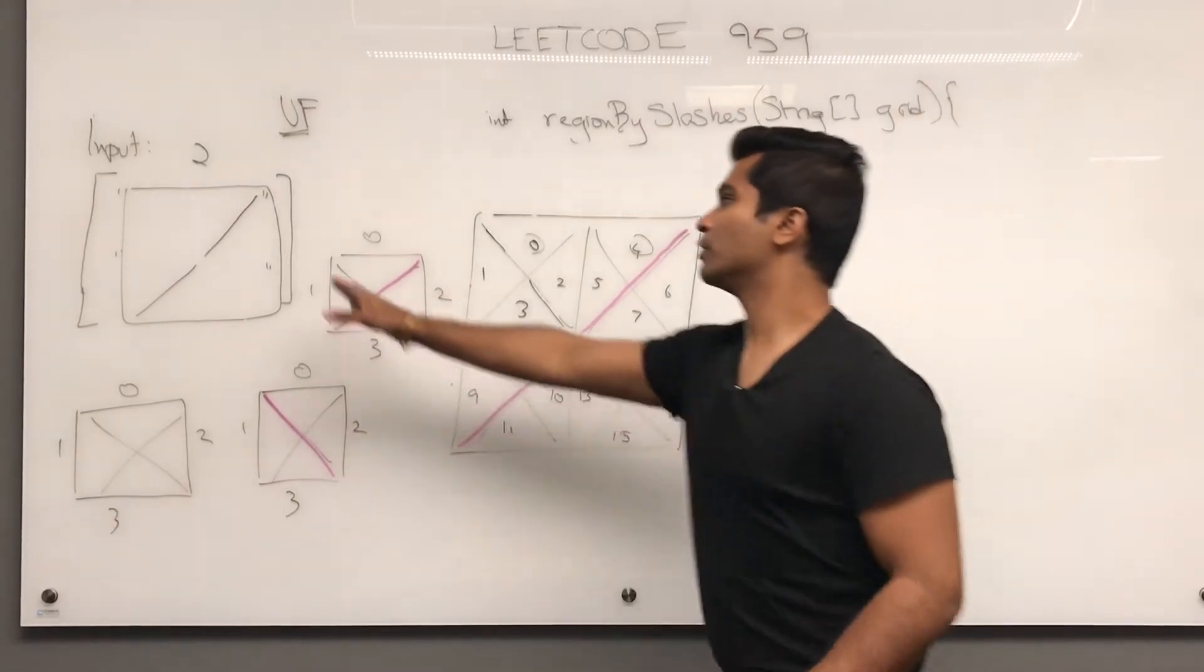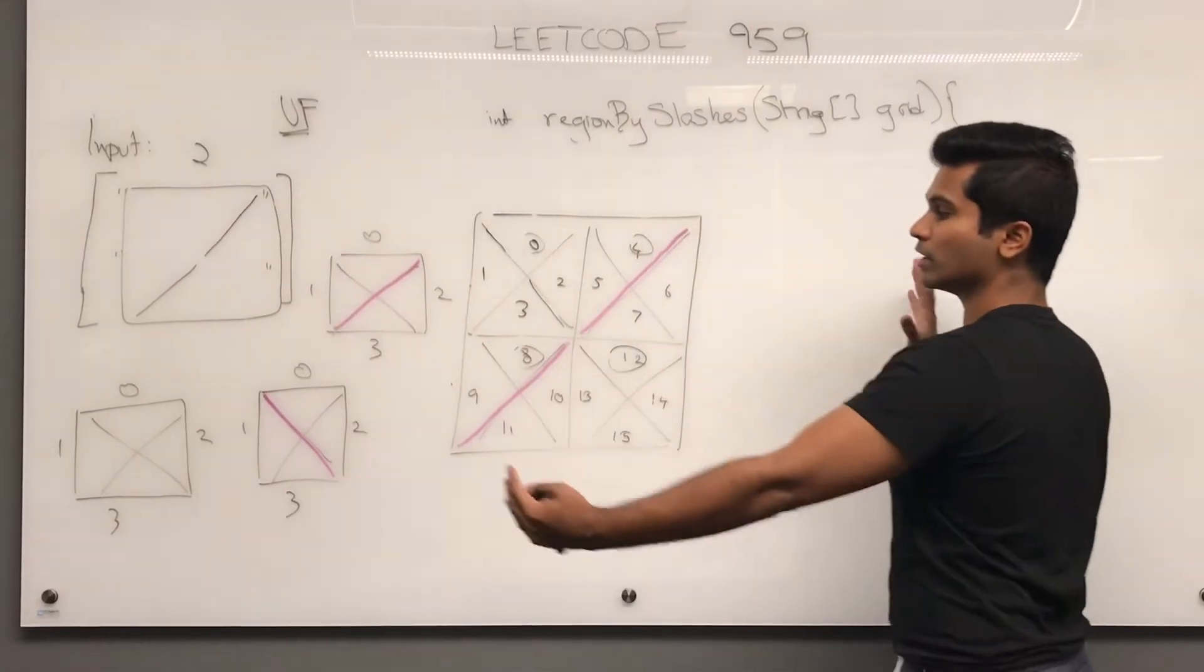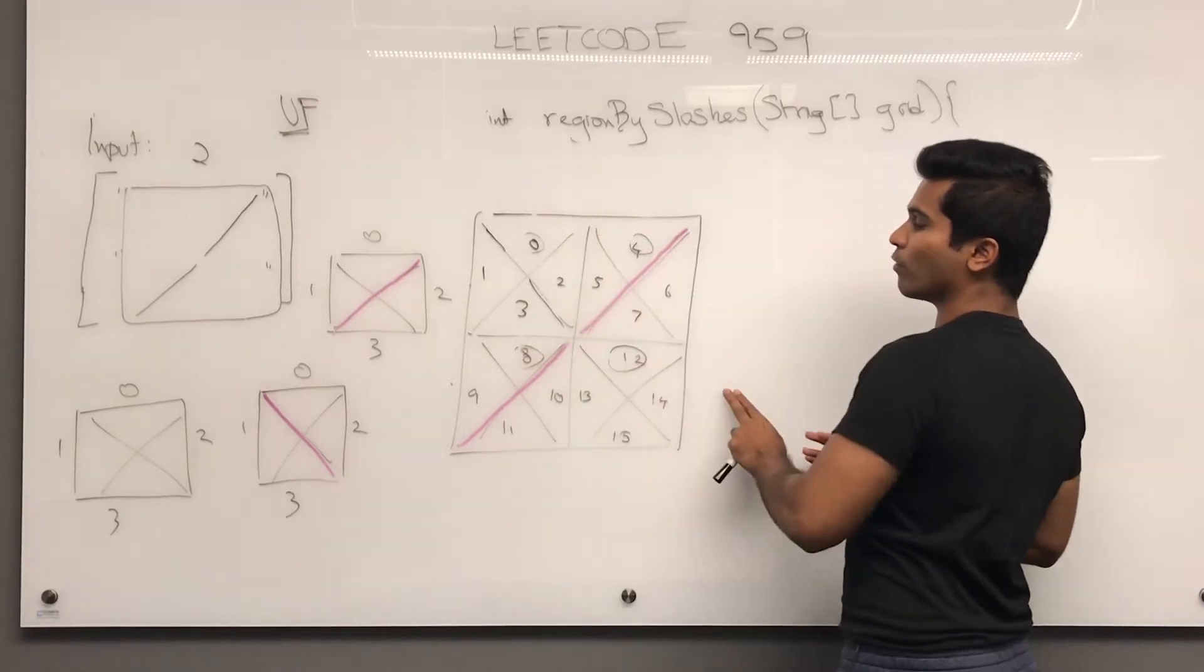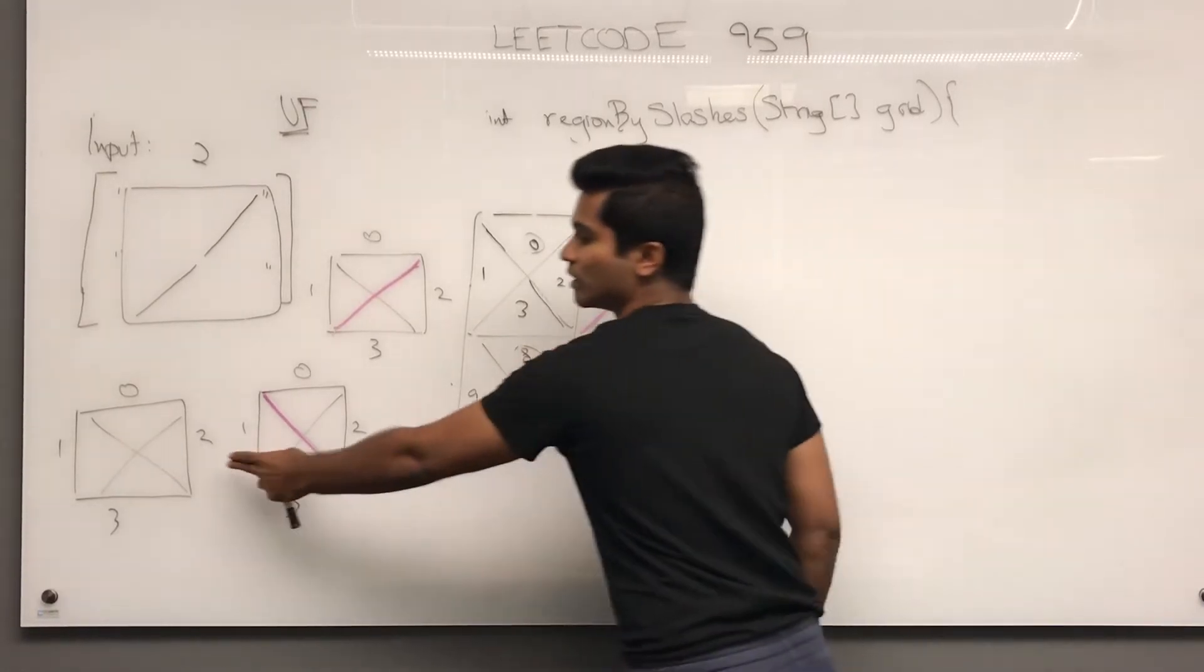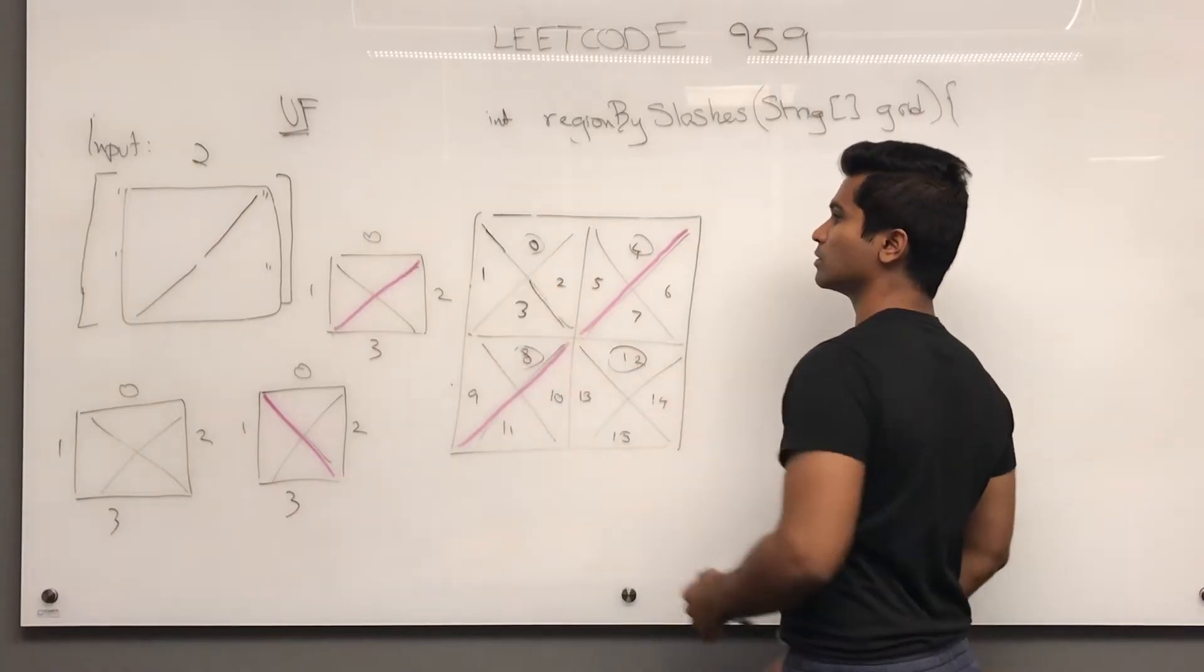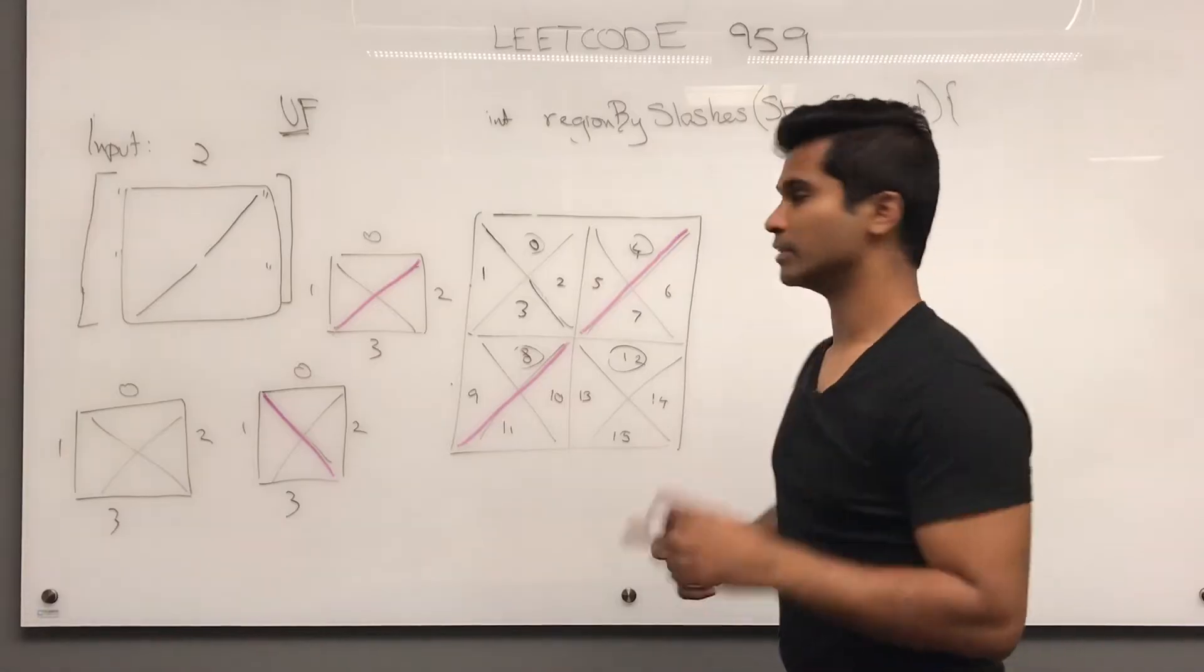Now if we have a 2 by 2 input it's going to get split into 4 by 4 because we're splitting each single square into 4 triangles. So let's get into it.